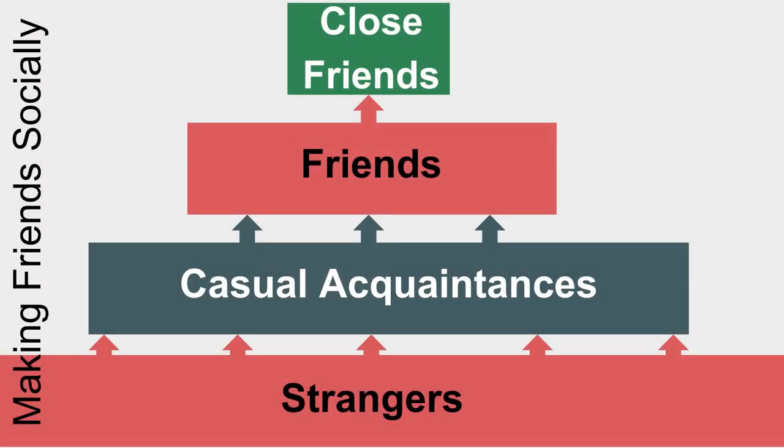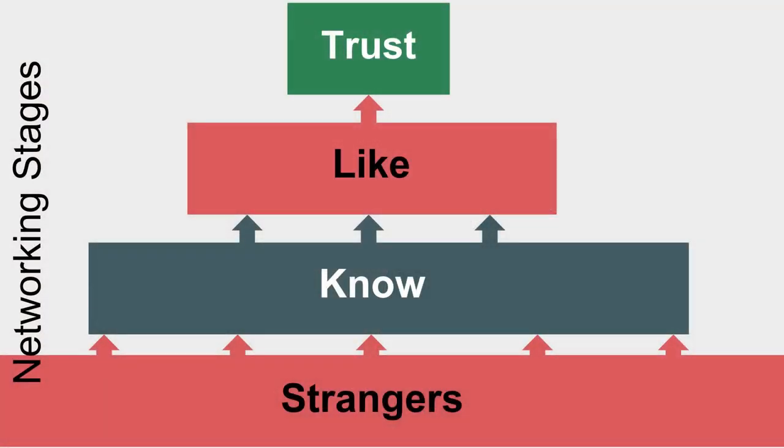Think about when you build friends socially. You start as strangers, then you become casual acquaintances before you become friends, and a few of those friends may become close friends. In networking, both parties go through similar stages of getting to know each other, liking each other, and then trusting each other. Only then will you get business opportunities, job openings, etc.